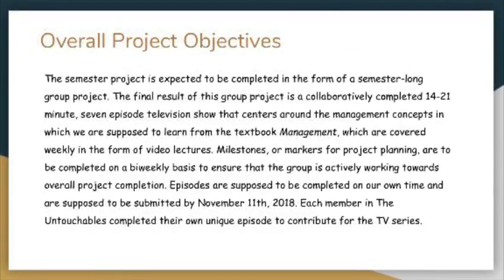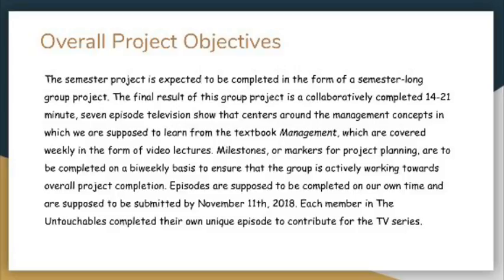The final result of this group project is a collaboratively completed 14-21 minute, 7-episode television show that centers around the management concepts learned in this class. Milestones for project planning are to be completed on a bi-weekly basis to ensure the group is actively working towards overall project completion. Episodes are to be submitted by November 11, 2018, and each member of the Untouchables completed their own unique episode to contribute to the TV series.